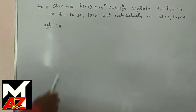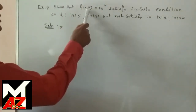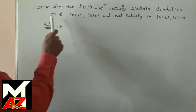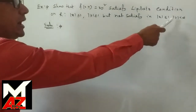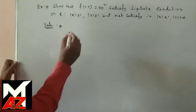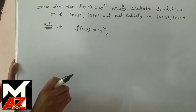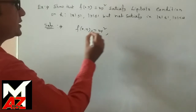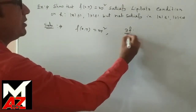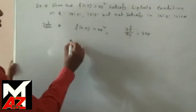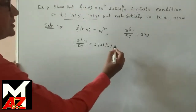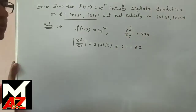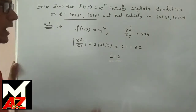Consider the example: f(x,y) = xy² satisfies the Lipschitz condition on rectangle R defined by |x| ≤ 1 and |y| ≤ 1. Here f(x,y) = xy², which possesses continuous partial derivatives. Differentiating with respect to y: ∂f/∂y = 2xy. So |∂f/∂y| = 2|x||y|. In this rectangle, this is ≤ 2·1·1 = 2. So the Lipschitz constant L = 2 and the condition is satisfied.